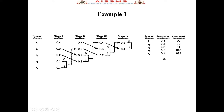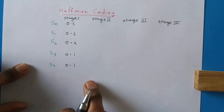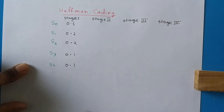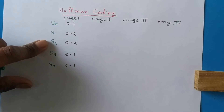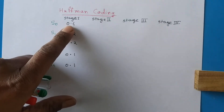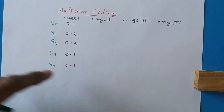In this example we observe that there are five symbols S0, S1, S2, S3, and S4 having probabilities 0.4, 0.2, 0.2, 0.1, and 0.1 respectively. We will solve this example of Huffman coding where we will assign codewords to these symbols.